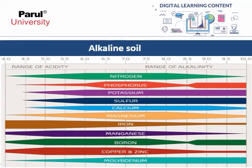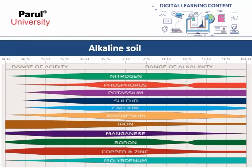Referring to the nutrient availability chart: on the left is the range of acidity, and on the right is the range of alkalinity. At the neutral pH range of 6.0 to 7.5, major nutrients — nitrogen, phosphorus, and potassium — are most available. Iron, manganese, boron, copper, and zinc are more available at pH 5.0 to 7.0. The exception is molybdenum, which is more available in the alkaline range, from pH 7.5 to 9.5.